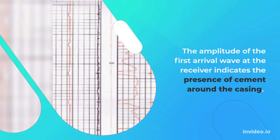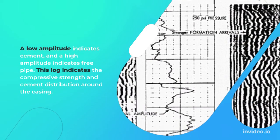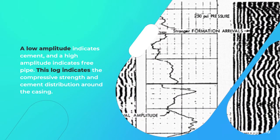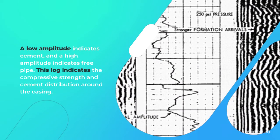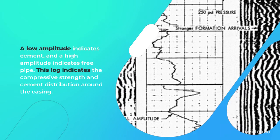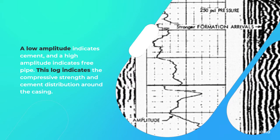The amplitude of the first arrival wave at the receiver indicates the presence of cement around the casing. A low amplitude indicates cement, and a high amplitude indicates free pipe. This log indicates the compressive strength and cement distribution around the casing.